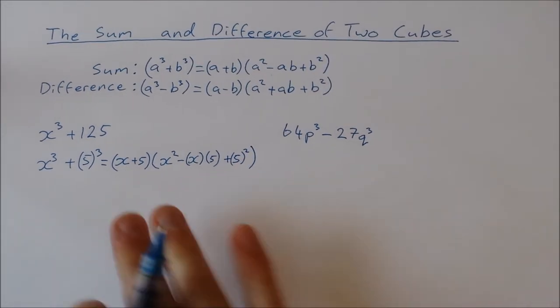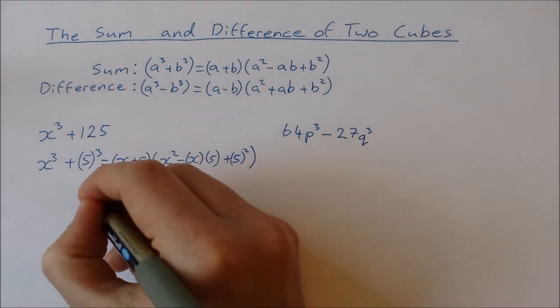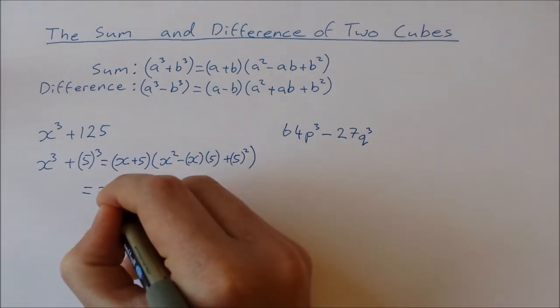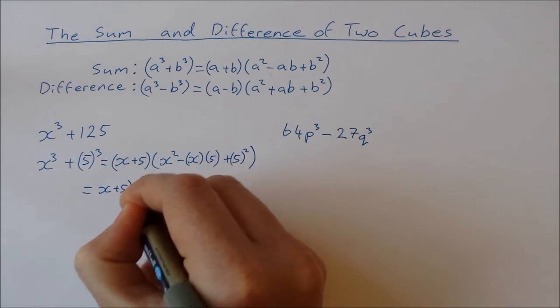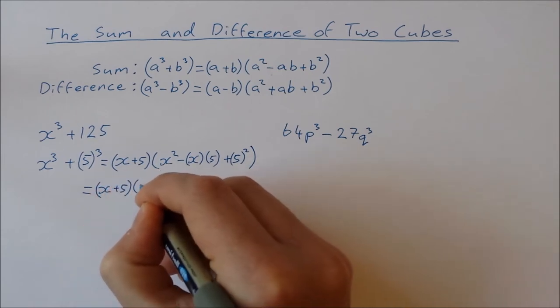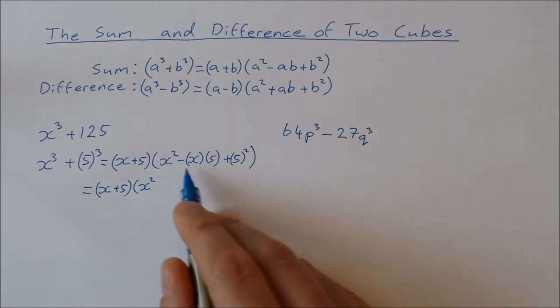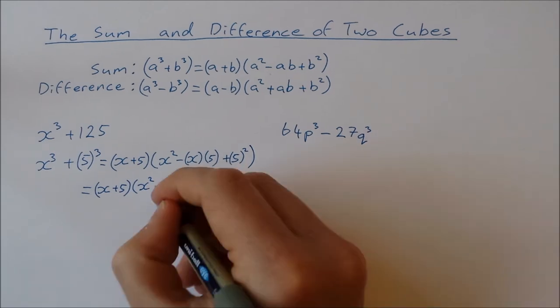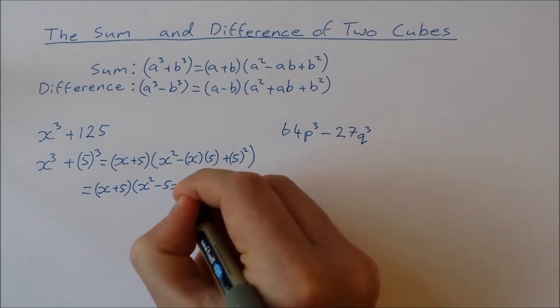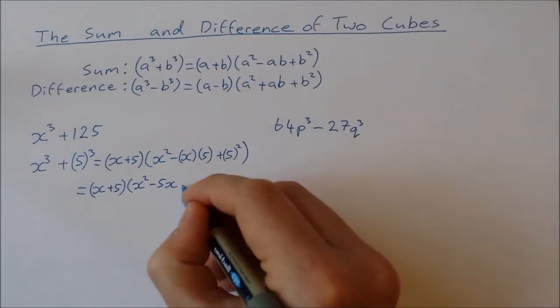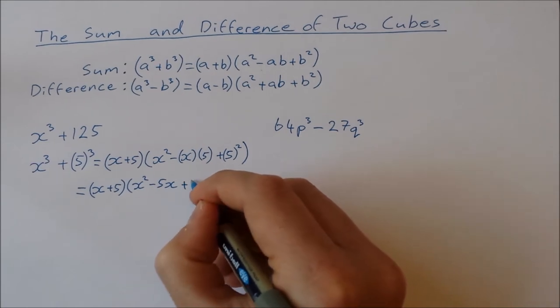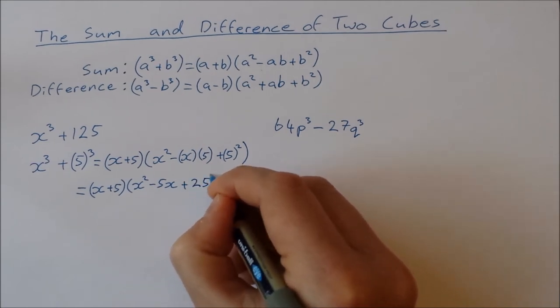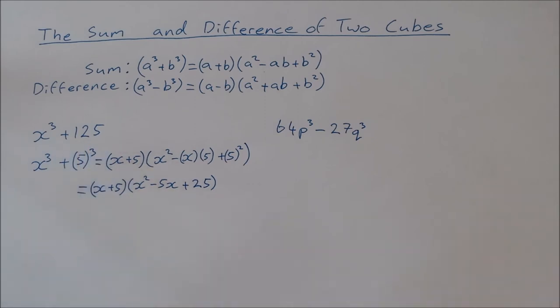Plus the second squared plus 5 squared. Now I'll multiply everything out inside that bracket and we get x plus 5 times x squared. x times 5 is minus 5x and then 5 squared is 25. So x cubed plus 125 is equal to x plus 5 times x squared minus 5x plus 25.